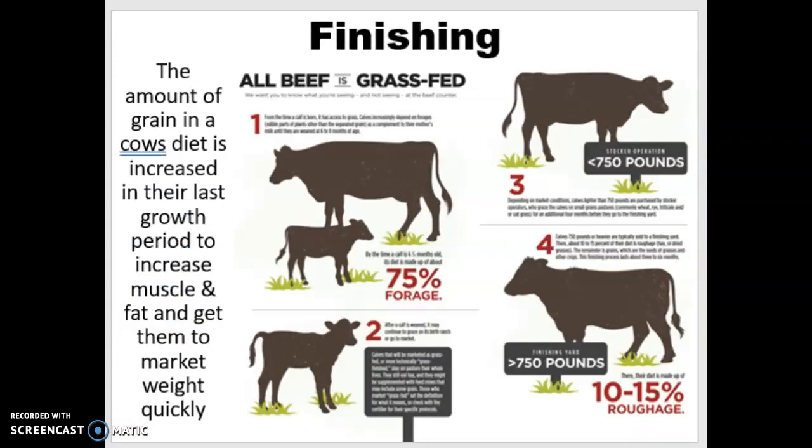Besides weaning, another important term in the life cycle of a beef cow is finishing — that's the last period of time before they are slaughtered where you're trying to increase their growth very quickly, increase muscle and fat to get them to market weight and get the characteristics you want in the meat. You hear a lot about grass-fed beef, and that's kind of a misnomer because pretty much all beef is grass-fed — most of their life they're out grazing on pasture. It's just in this finishing period that it differs. Meat can either be finished on grass, where they stay in the pasture the whole time, or finished on grain, which many people think gives a much more buttery, richer flavor — and that's why most beef in the US is grain-finished.